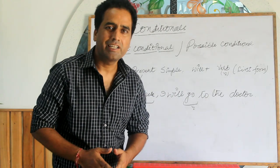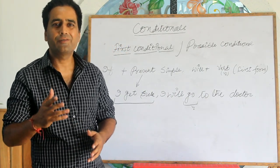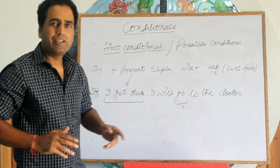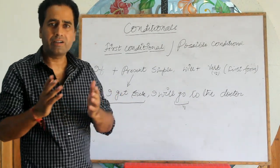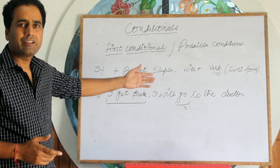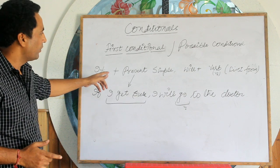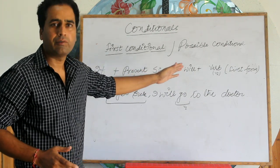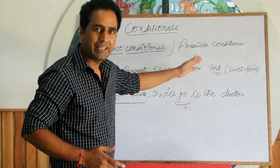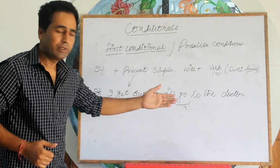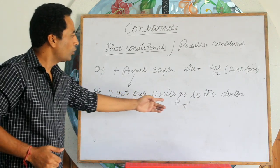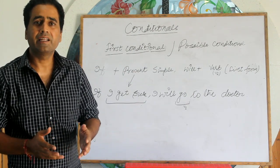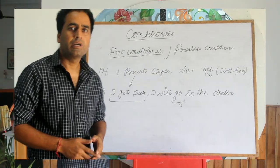Then we have the first conditional, in which we discuss possible and likely future events. It is also called the possible conditional — there is possibility, something might happen or might not happen. The structure is: if plus present simple in the conditional clause, and will plus the base form of the verb in the result clause. For example: if I get sick, I will go to the doctor. It is possible I may get sick, and if it happens, there is probability that I will go to the doctor.